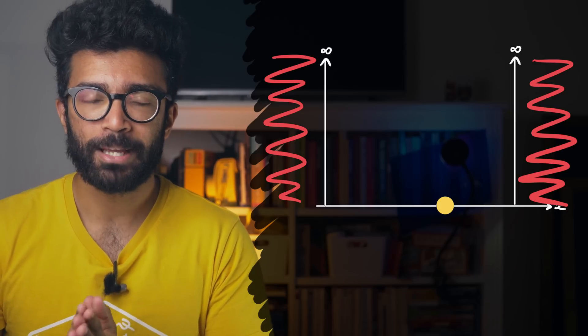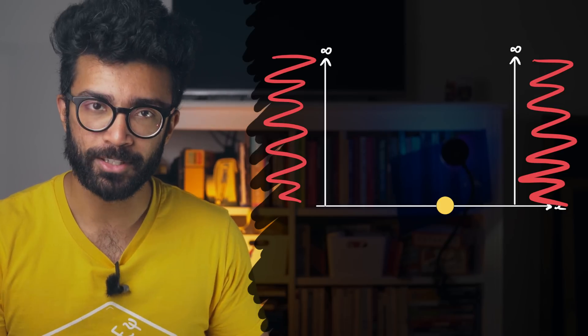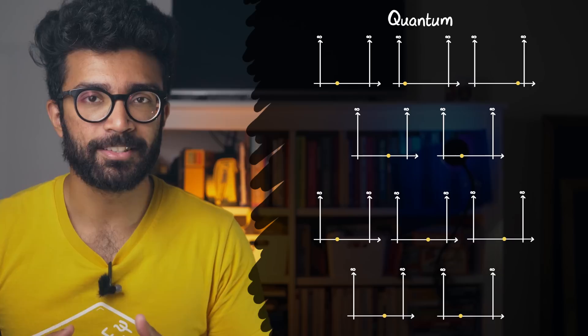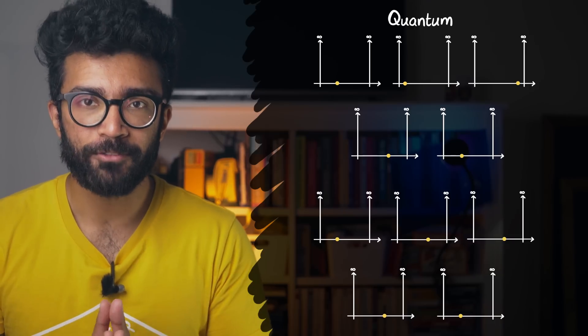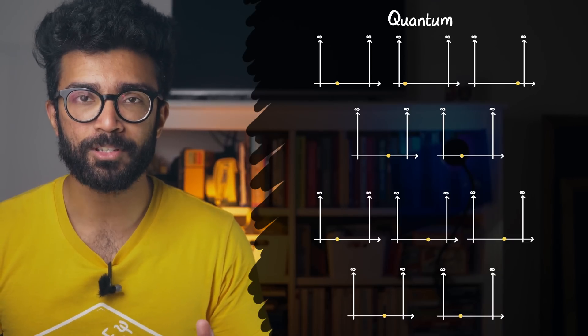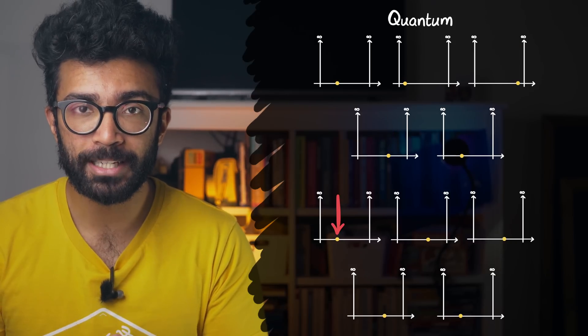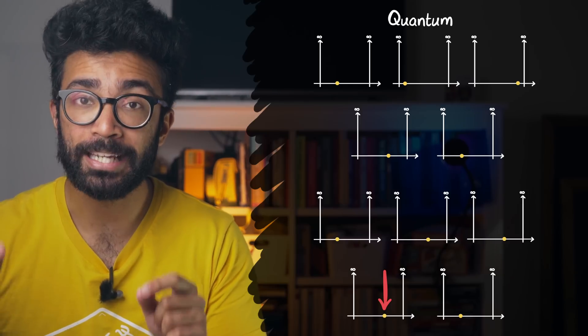However, if we considered making the exact same measurement on identical copies of our system at exactly the same time, we would actually find the particles in all of these systems to be in different places, despite the systems originally being identical to each other in every way.